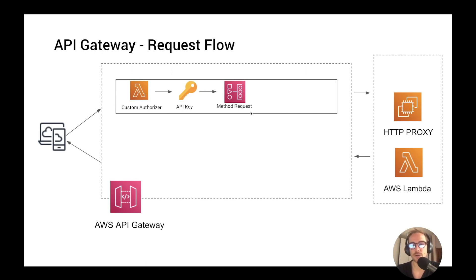Now I want to explain the next step, which is how to configure the method requests of an API. Method requests are like the public interface of your API. They define what your endpoint expects, which elements are required, and more. With the method requests, you can configure different parts of the request, such as the query params, headers, and body.